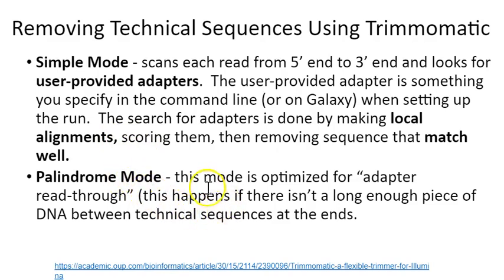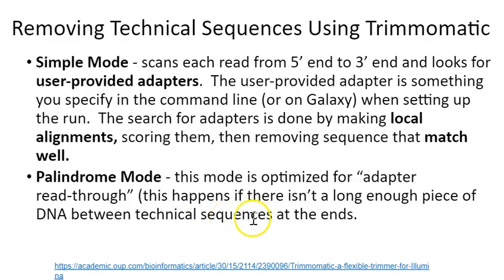Palindrome mode is a mode that's been built into Trimmomatic to optimize for what's called adapter read-through. If there isn't a long enough piece of DNA between the technical sequences at the end, you'll get read-through where the sequencing will run right into the adapter sequence on the other side from where it starts. That can be problematic in the data, and the palindrome mode in Trimmomatic enables removal of that.